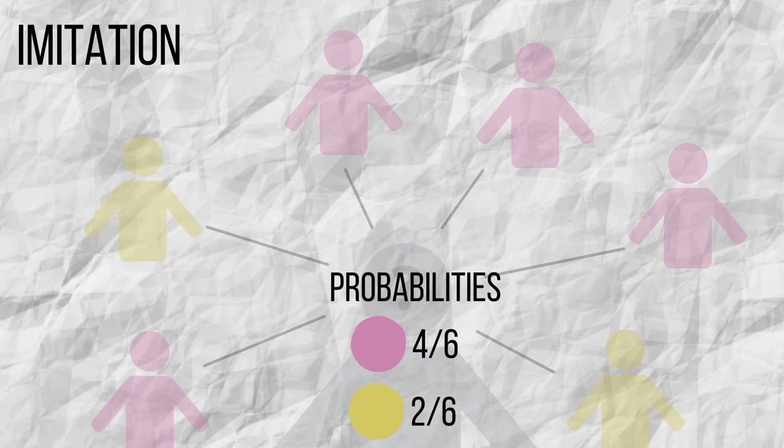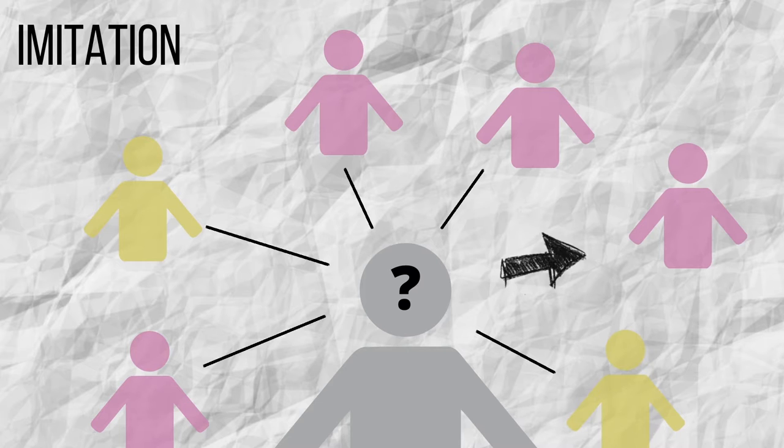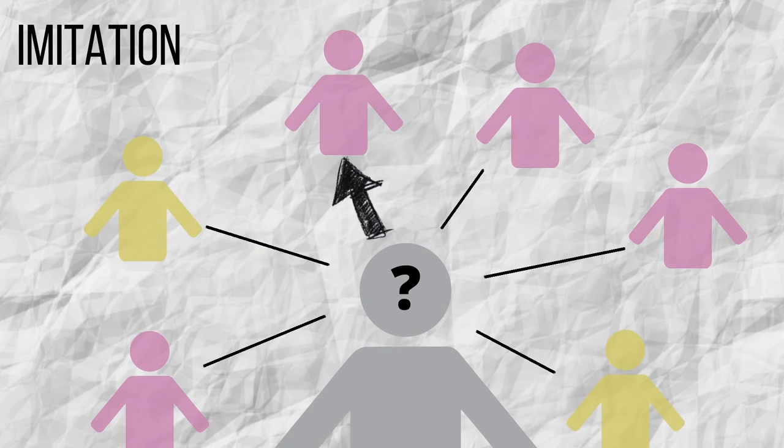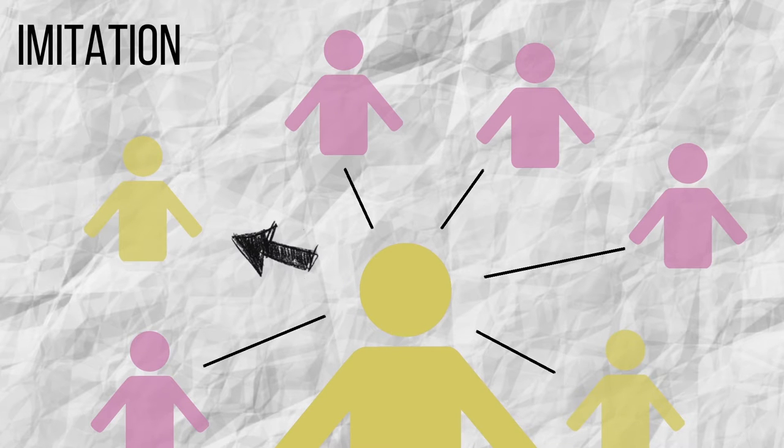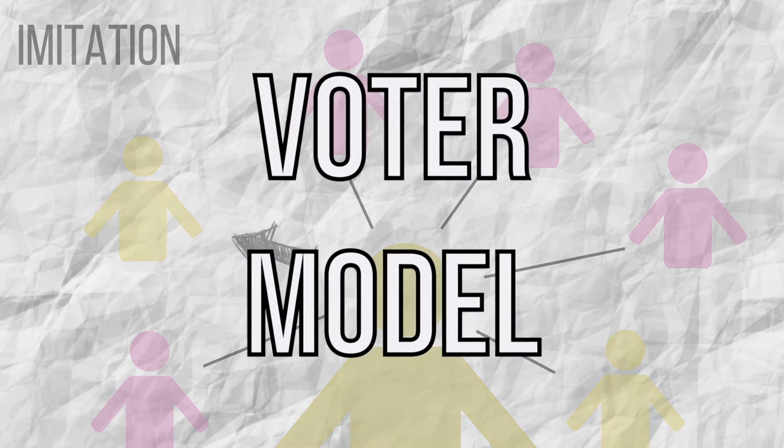Specifically, there's a 4 sixth chance that he will take the pink option and a 2 sixth chance that he'll choose the yellow option. Which neighbor will Bob choose? Place your bets. The winning option is… the yellow one. The model we have just depicted is known as the voter model.